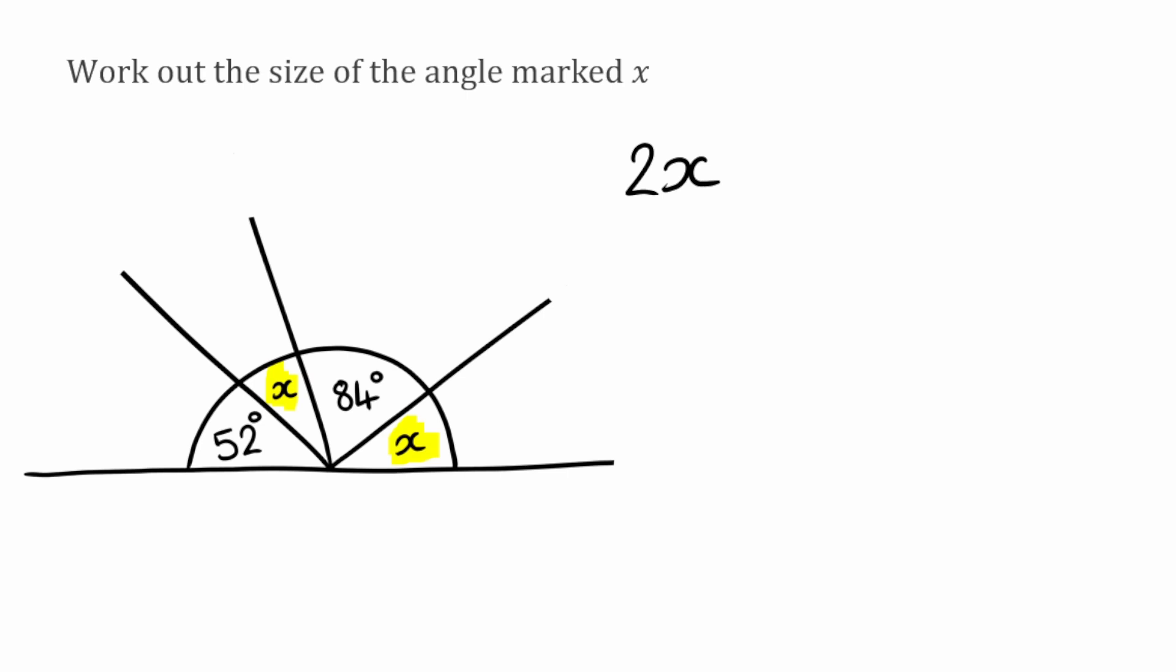And then in terms of the angles we were given we've got 52 degrees and 84 degrees. Well if I add them 2 degrees together I actually get 136. So as an expression the angles on this straight line would add up to 2X plus 136 because all we've done is collect the like terms.